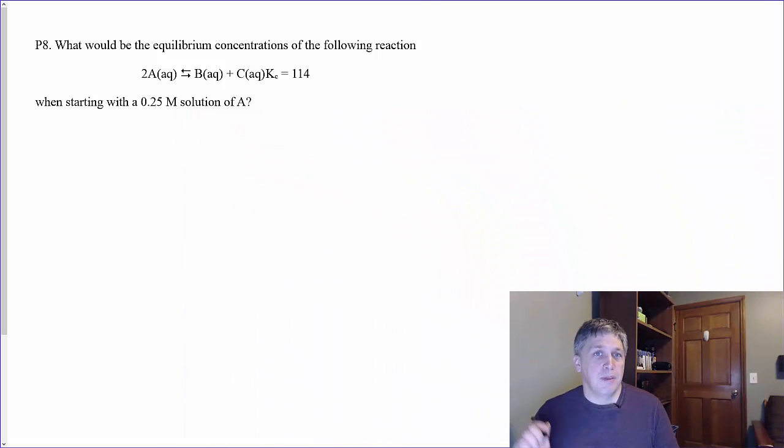But anyway, so we're going to do problem P8 and P9. We'll start with problem P8 because numerical order seems to make sense. But with problem P8, we're given this reaction, and I just used a generic ABC equation, but 2A reacting to give B and C. And we're trying to figure out the equilibrium concentrations when you start off with a quarter molar of A.